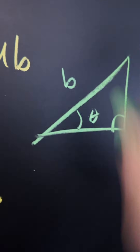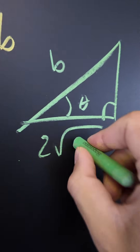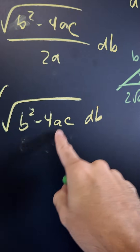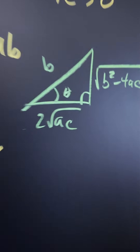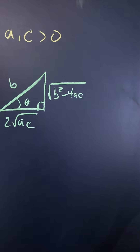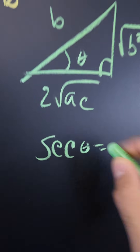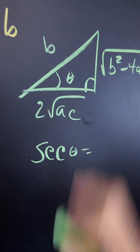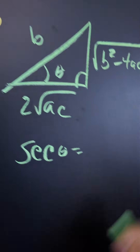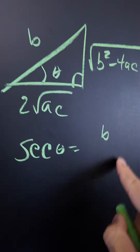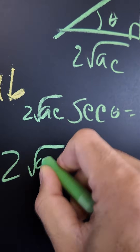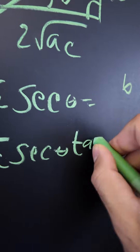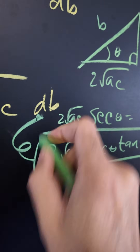When I draw out my right triangle, the hypotenuse is going to be B and the adjacent side is 2 root AC — taking the square root of 4 and the square root of AC. The opposite side will be root B squared minus 4AC, which you can verify with the Pythagorean theorem. So secant theta equals the hypotenuse over the adjacent: B over 2 root AC. Differentiating gives us 2 root AC · secant theta · tan theta · dθ = dB, which will prove very useful.